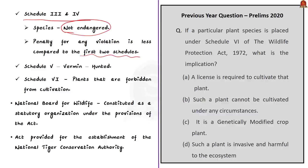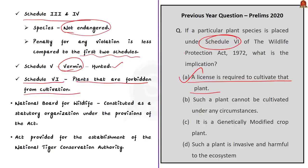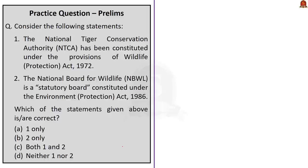Coming to Schedule 5, this schedule contains animals that are considered as vermin — these animals can be hunted. Finally, Schedule 6 contains plants that are prohibited from cultivation. From this discussion you can arrive at the correct answer for the question, which is option A: a license is required to cultivate that plant. The National Board for Wildlife was constituted as a statutory organization under the provision of this act, and the act also provides for the establishment of the National Tiger Conservation Authority.